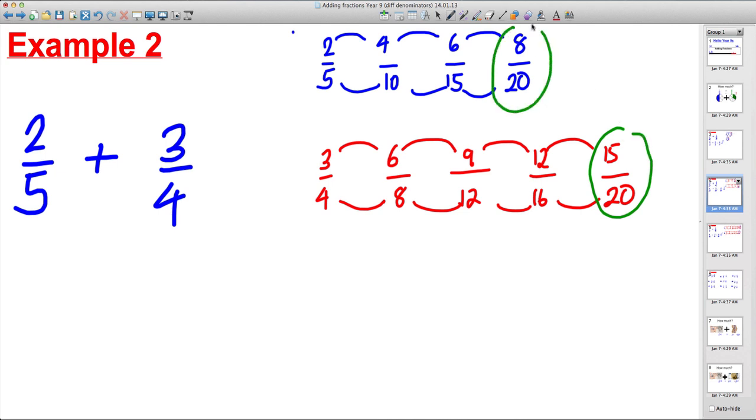At this point, we can stop. For the first time, the numbers on the bottom are exactly the same. So we can replace 2 fifths by 8 twentieths. We can replace 3 quarters by 15 twentieths. And now we can add them. 8 twentieths plus 15 twentieths. If we count that up is 23 twentieths. And we're done.